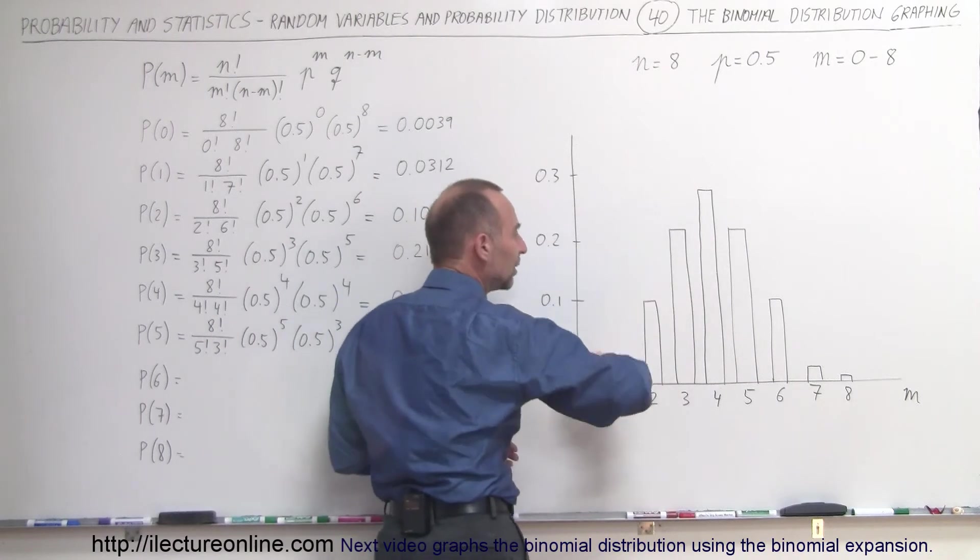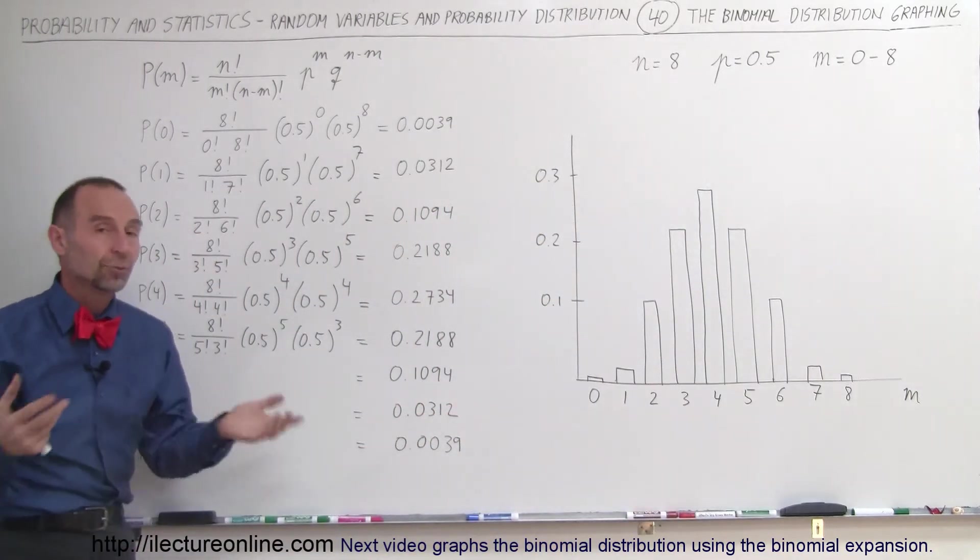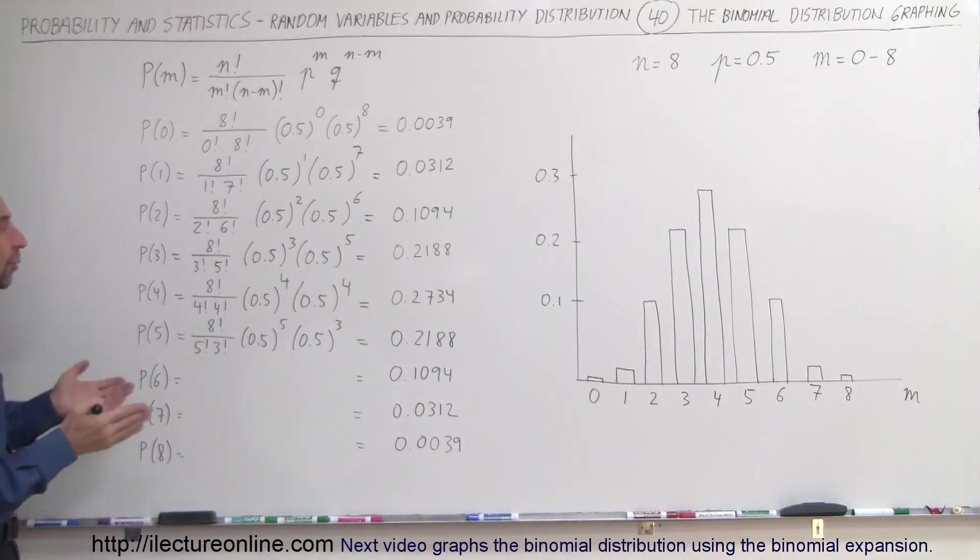Again, the heights of these when you add them all up should add up to one, because the probability of all of them occurring together would of course be equal to 1. That's the total probability case.